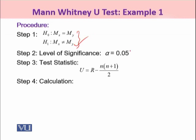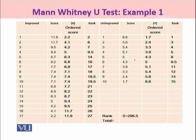Now students, here we are going to take it as 0.05. U is the test statistic of Mann-Whitney and it is being taken as R minus n(n+1)/2. Now we are going to follow the calculations.